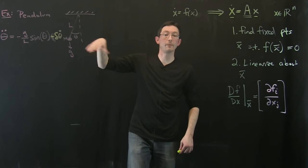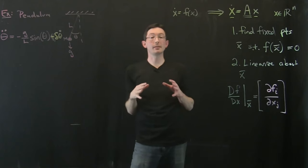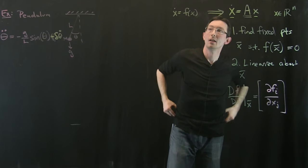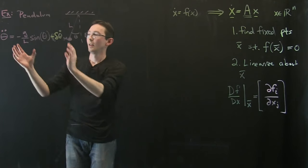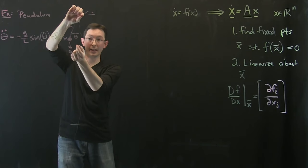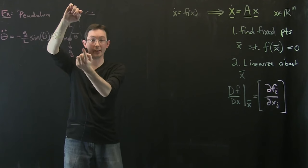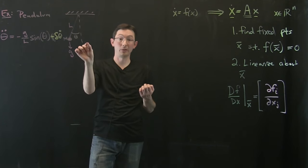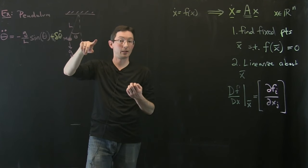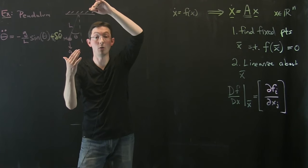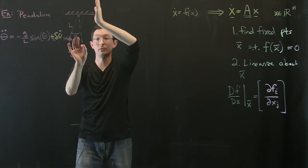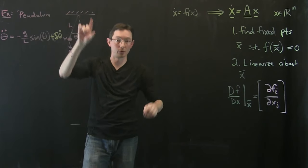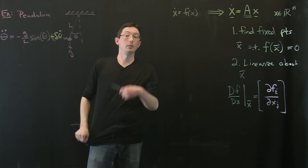One reason I really like working this out on physical systems is because we have tremendous physical intuition about what should happen. In your gut, you know what the pendulum does. If I take the pendulum about its down equilibrium and kick it a little, it's going to oscillate and eventually come to rest. So the eigenvalues have a negative real part because it's stable, and a plus or minus i term because it oscillates. If I lift this thing up to the pi position and kick it ever so slightly, it's going to completely move away from that position - at least exponentially for small angles.